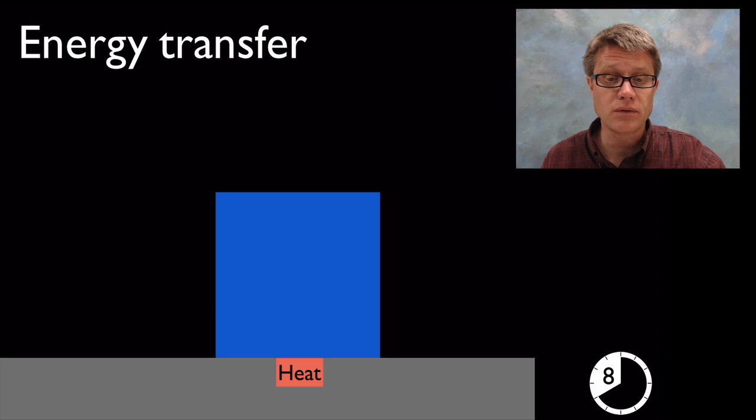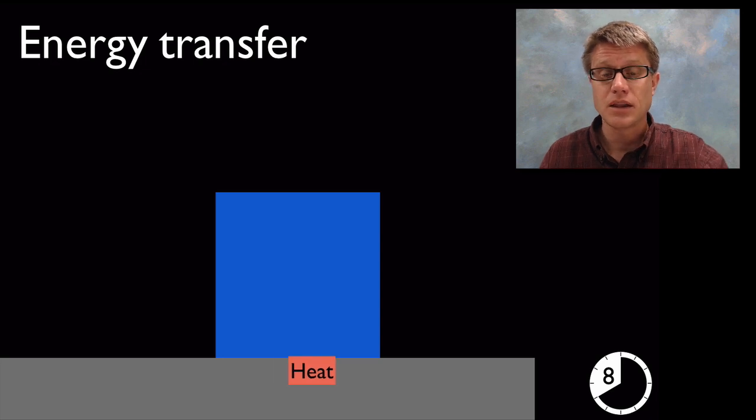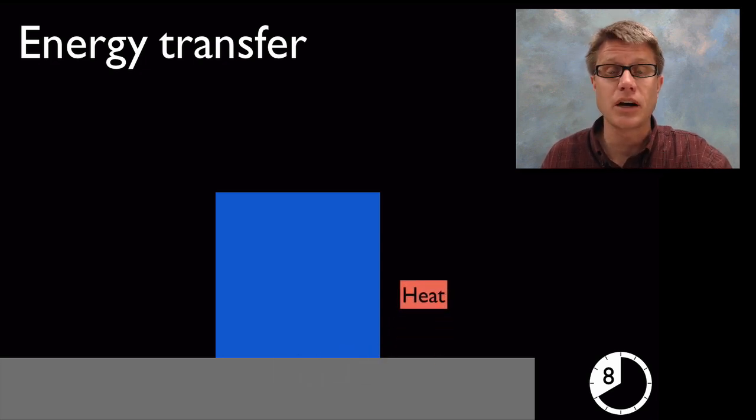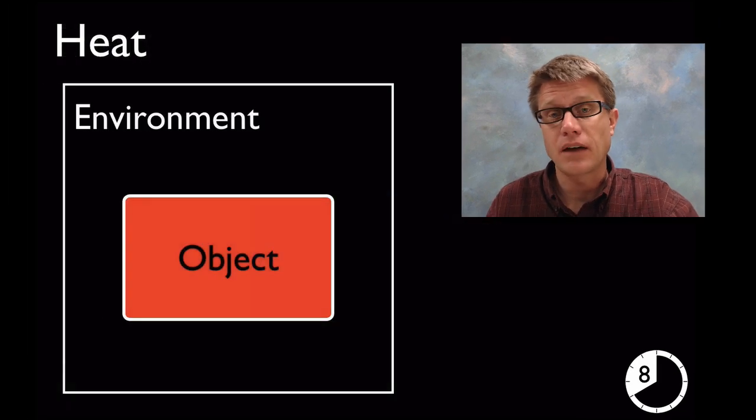What happened to the energy of the box? Well it didn't go away. It was converted. It was converted into heat on that table as the box slid across it. It was converted into sound energy. Eventually that energy is going to move off to the environment and be lost as heat. All energy is eventually going to reach that form of heat.